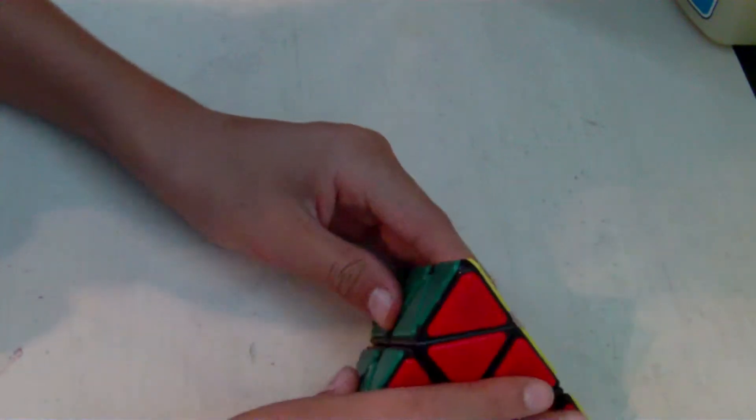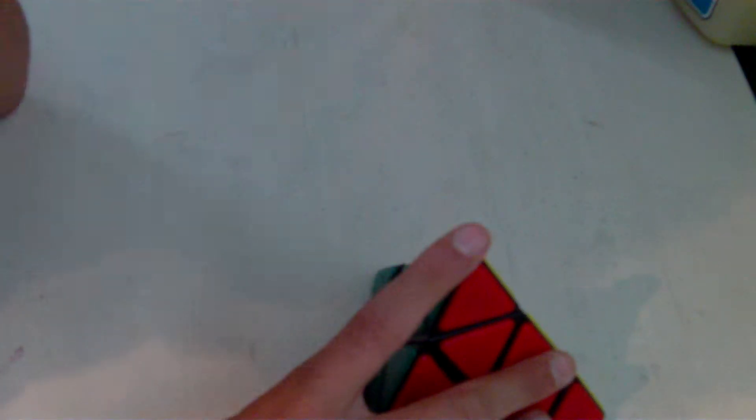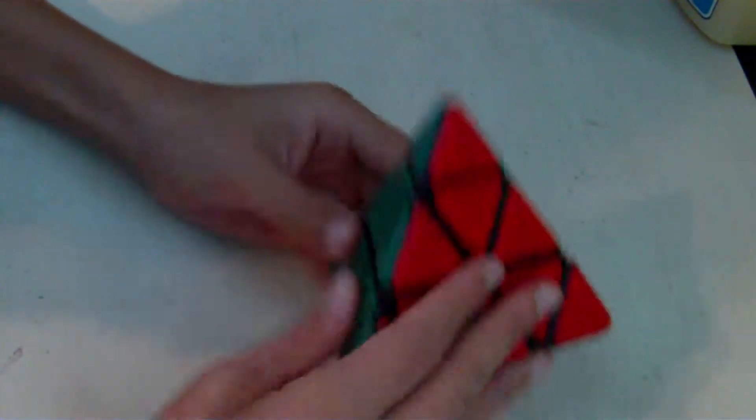Now, when you go to the Cube Depot, there will be four types of Pyraminxes: black-tiled, black-stickered, white-tiled, and white-stickered.